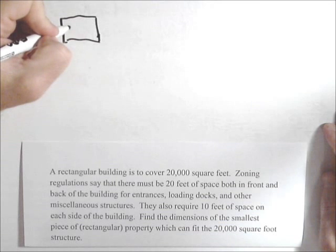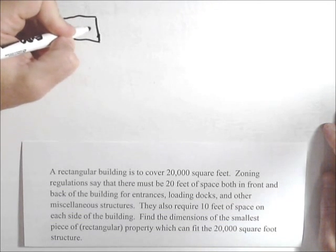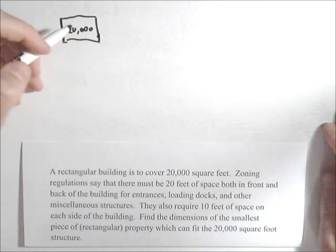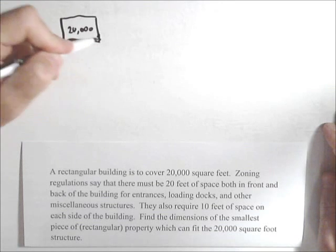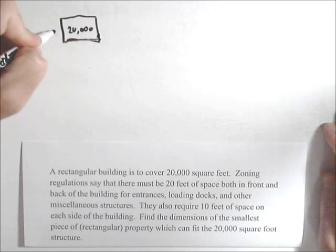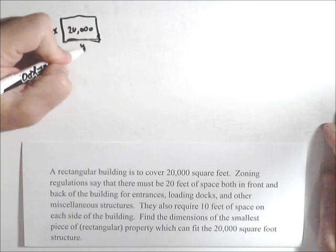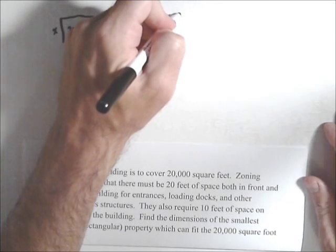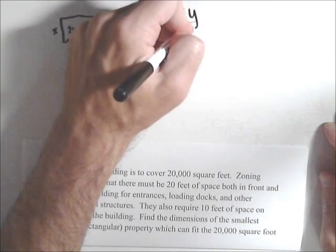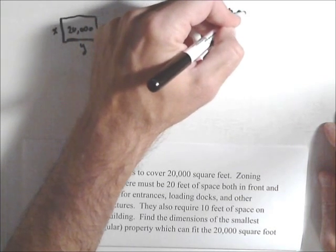Now we know the building has to be 20,000 square feet. And we don't know its dimensions, so perhaps that's what we label our variables. So maybe x and y. So we know that x times y must be 20,000.